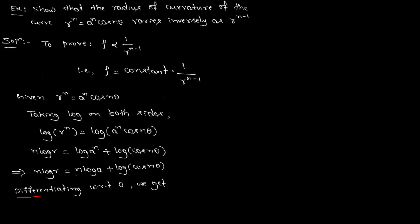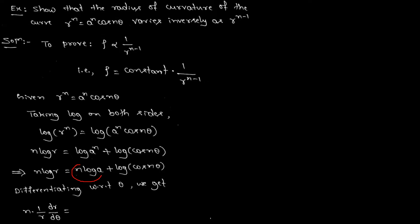Now let us differentiate with respect to theta on both sides. n is a constant, so we keep it as it is. Differentiating log r gives 1 over r times dr by d theta. The term n log a is a constant, so its derivative is zero.